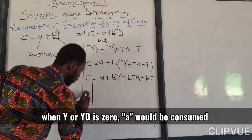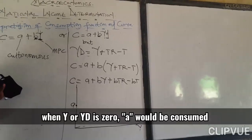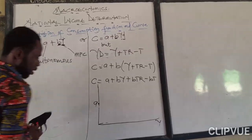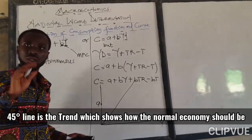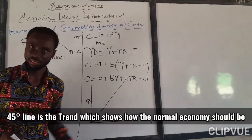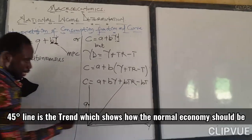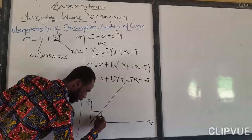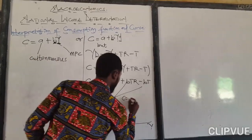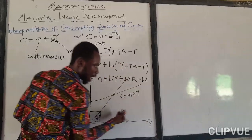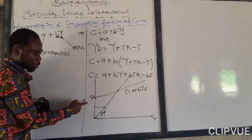If income is equal to zero, we are going to consume A. So A is the intercept on the vertical axis. We normally also draw our 45-degree line. Don't be confused with the 45-degree line — it is a trend showing how the economy is supposed to move in a direct relationship with income. So the consumption curve cuts the 45-degree line, and we see C equal to A plus BY.